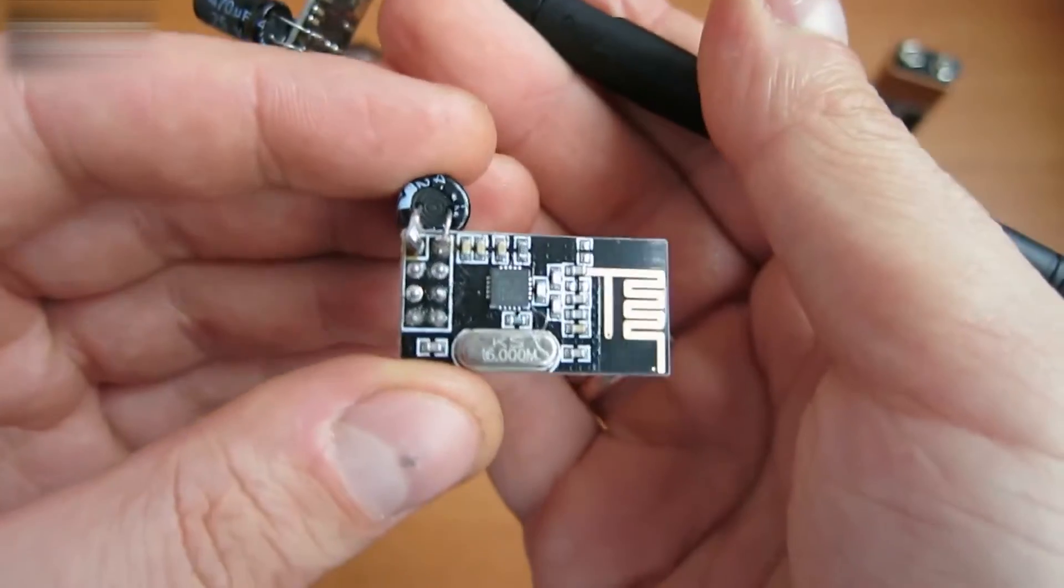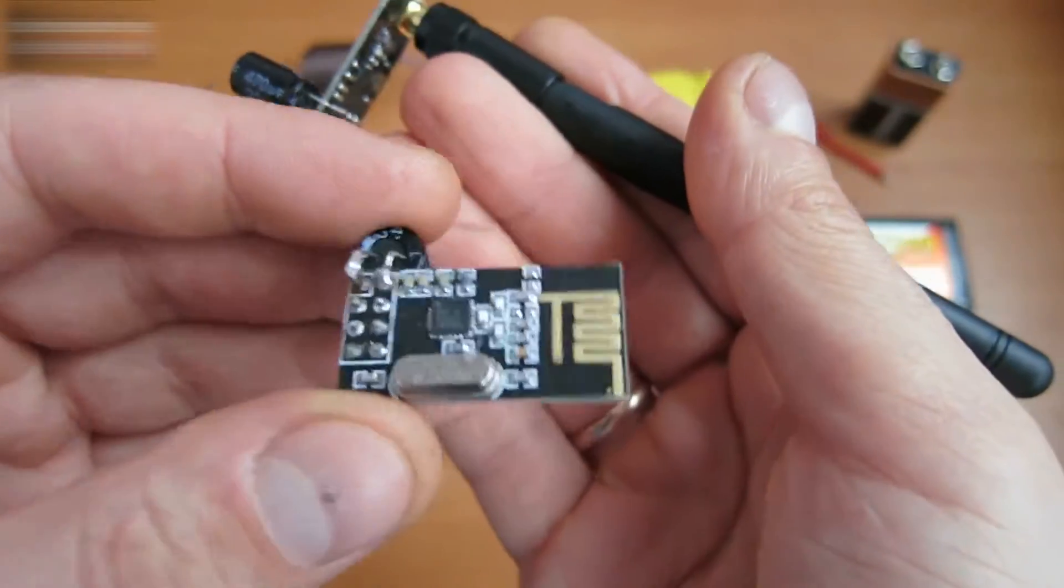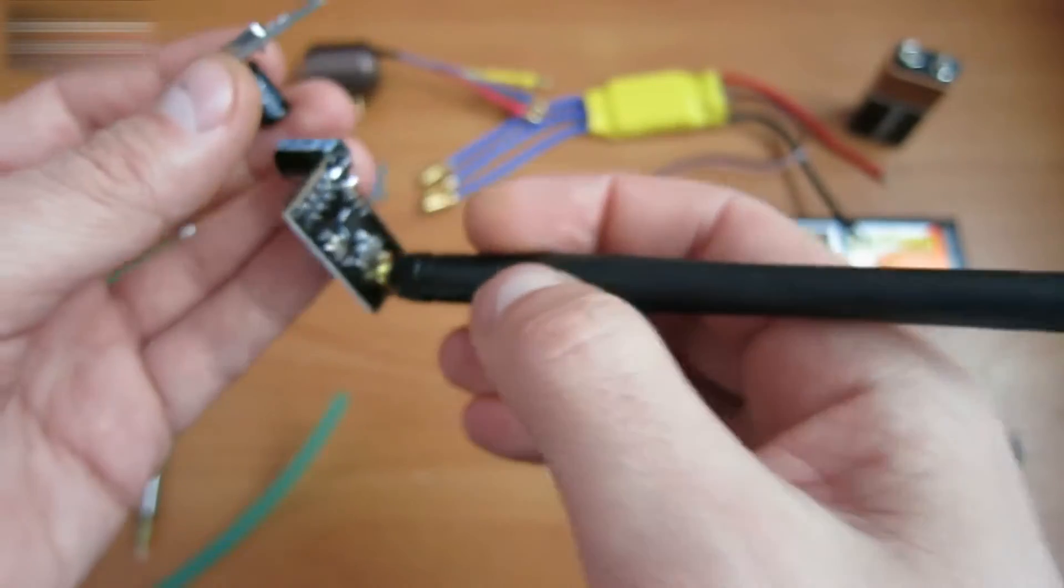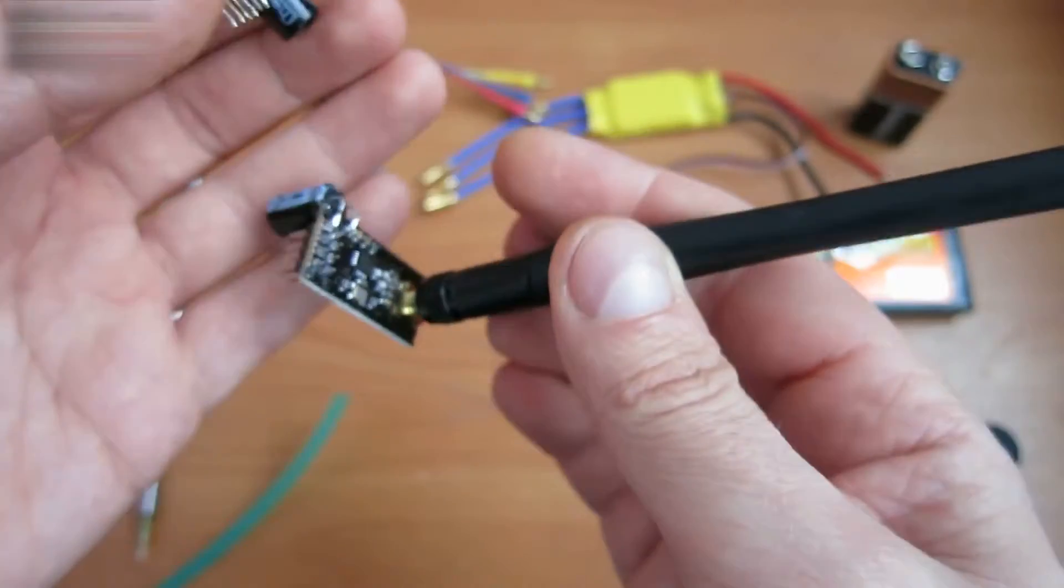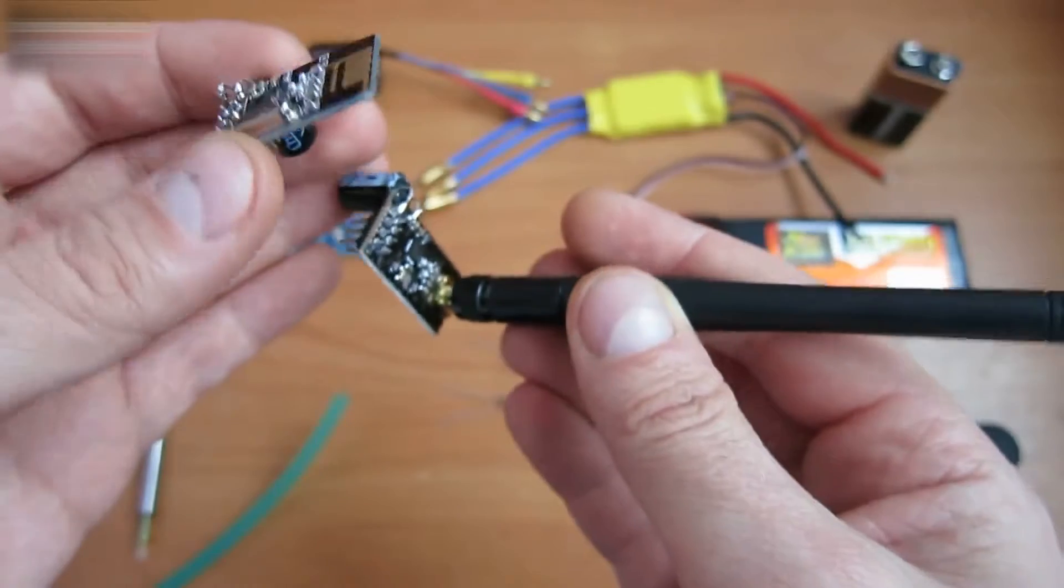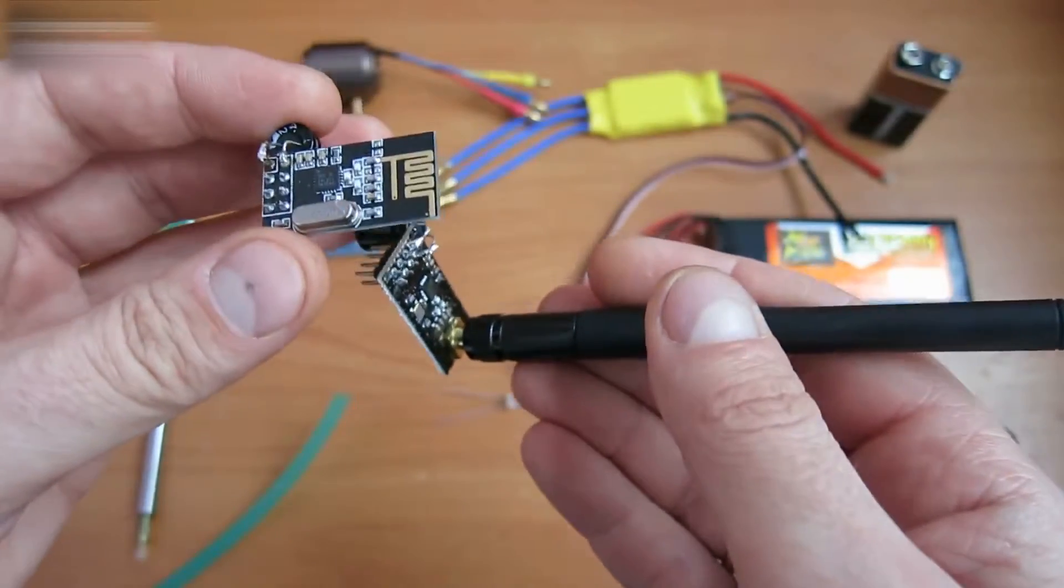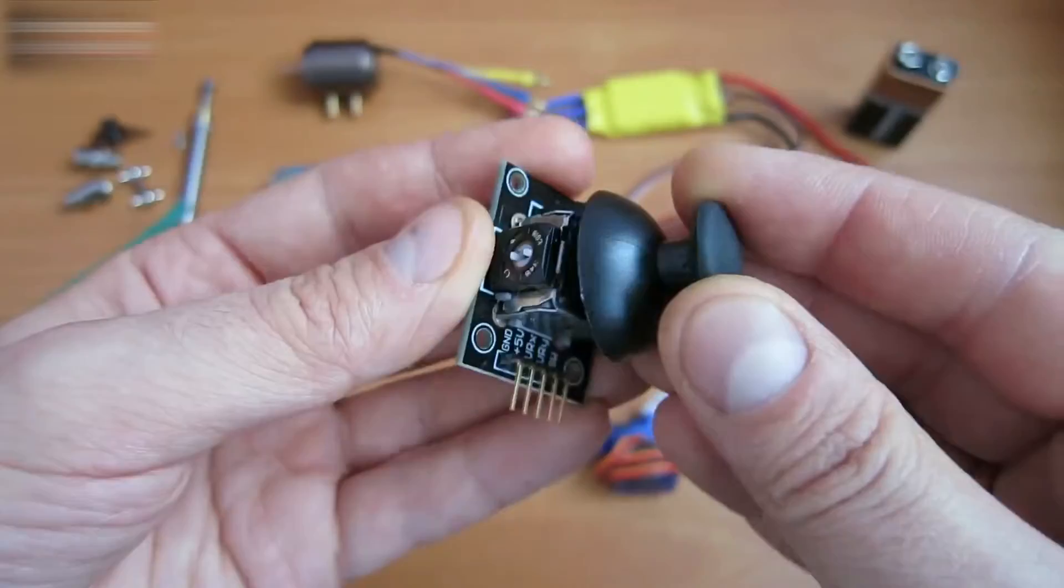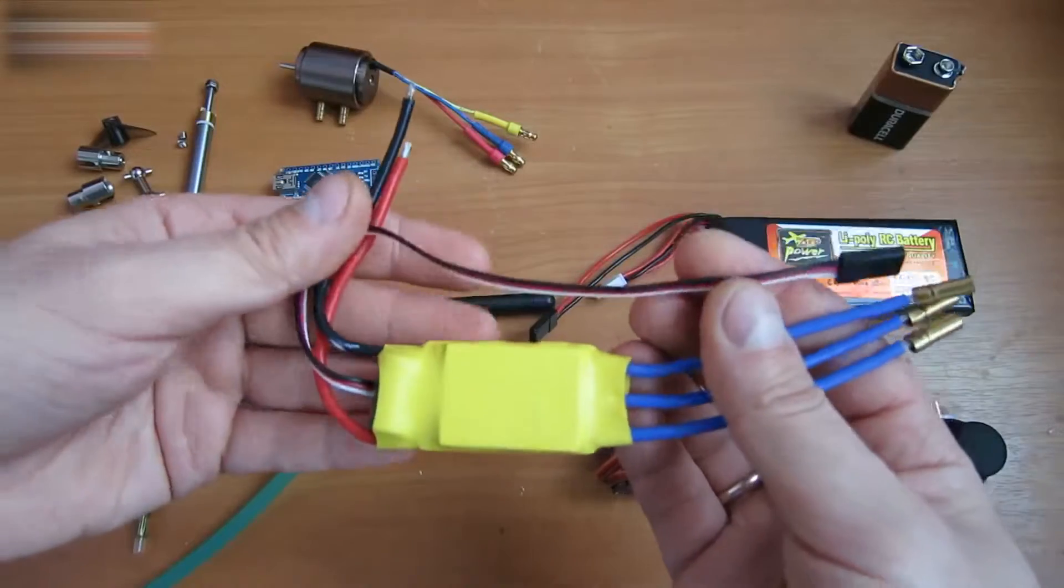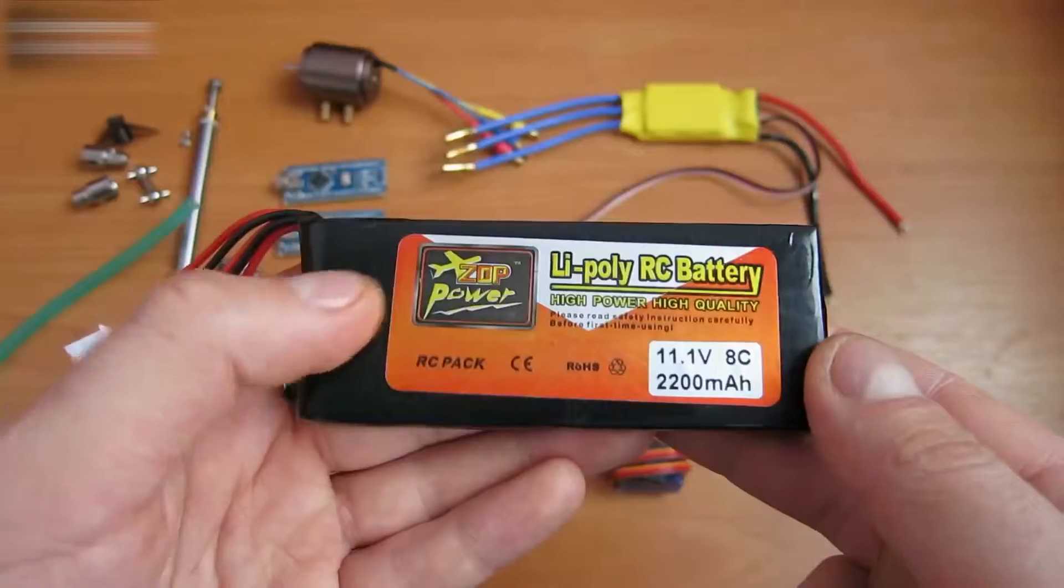We have two Arduino Nano boards, NRF24L01 modules, one with an antenna, the other without an antenna. This means the range of the remote control can be increased up to 3,000 feet. This is an SG90 servo, two joysticks, and a speed controller for a brushless motor.